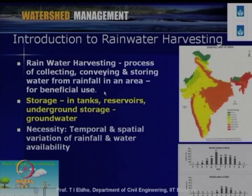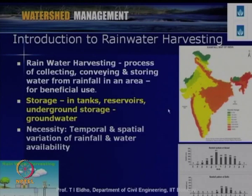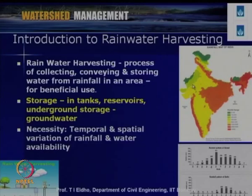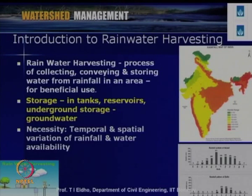In a country like India, rainfall variation is significant. Rainfall is mainly in the monsoon season — about 3 to 4 months from June to September or October — and the distribution is also spatially uneven. In some locations rainfall exceeds 200 centimeters per annum, even more than 4000 to 5000 millimeters. In other locations it may be only around 20 centimeters or 200 mm or less. The necessity of rainwater harvesting is due to this temporal and spatial variation of rainfall.